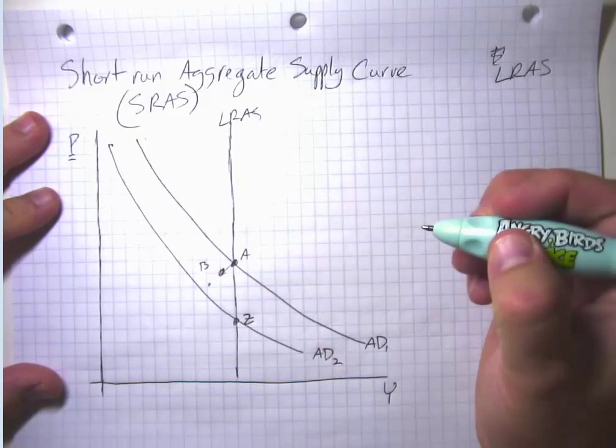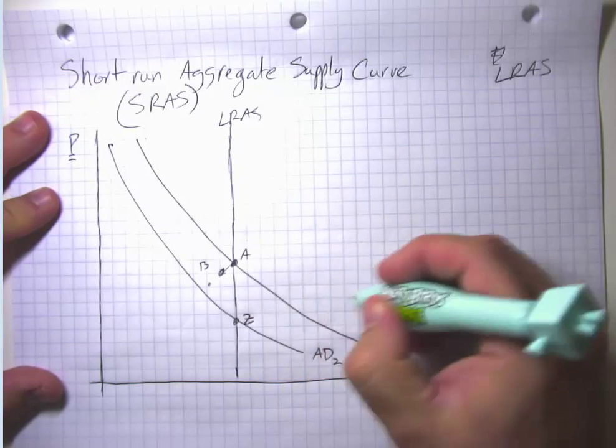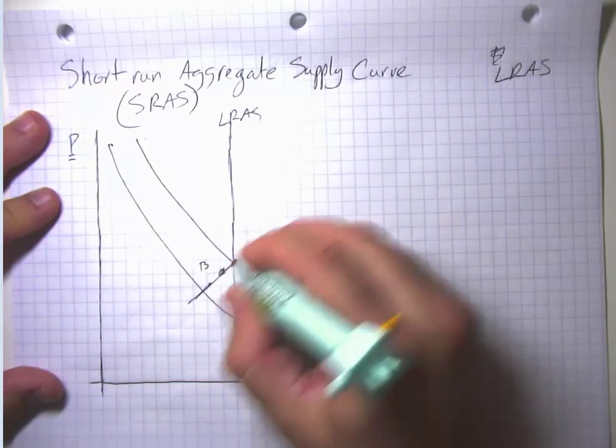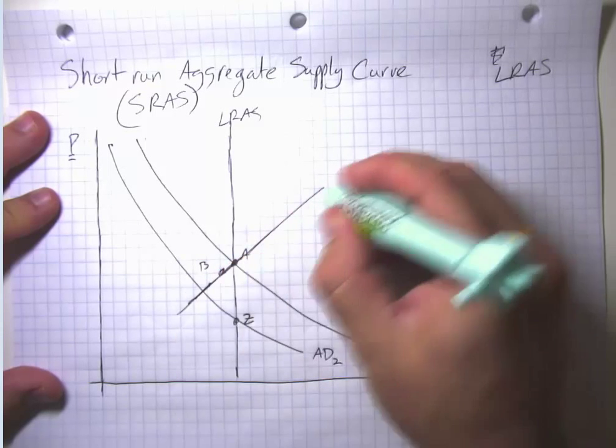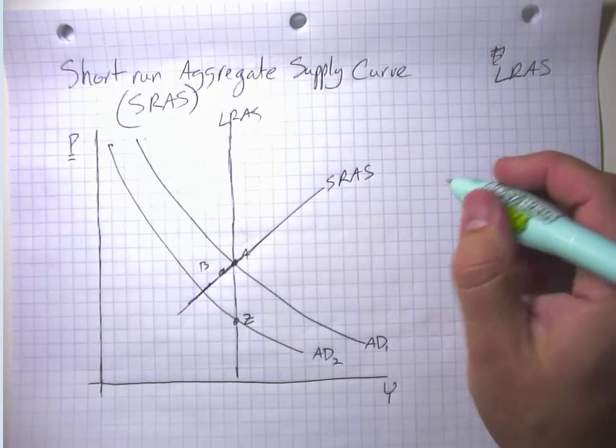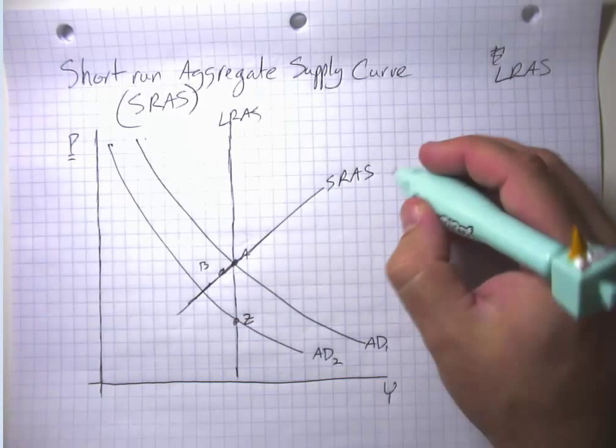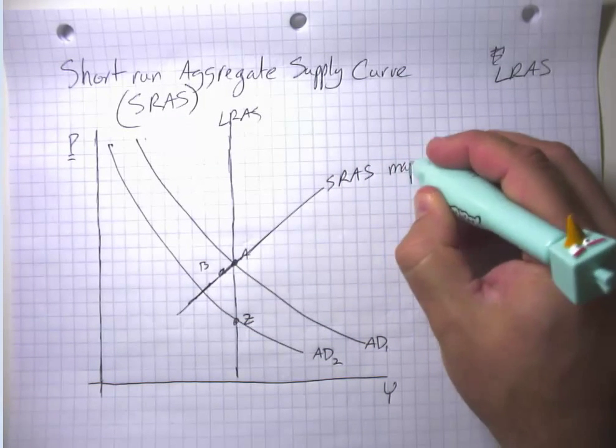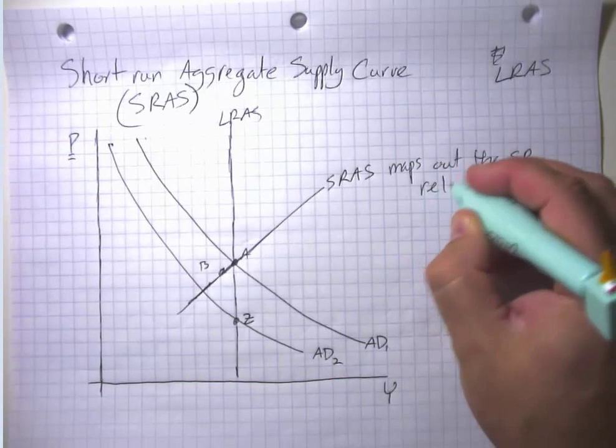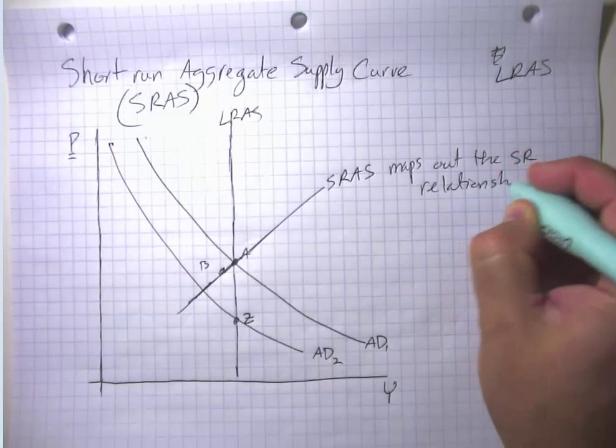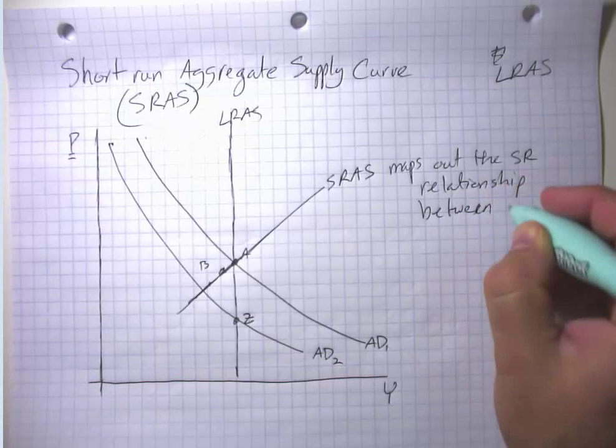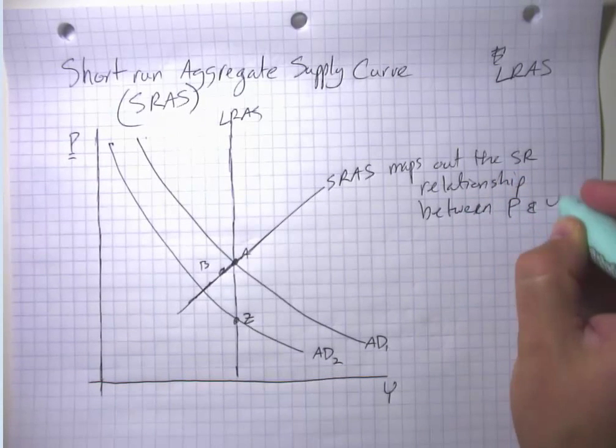And if we had had a growth in aggregate demand, what would have happened was GDP would have risen and prices would have risen too. So we have some kind of short-run aggregate supply curve. And the short-run aggregate supply curve maps out the short-run relationship between the price level and real GDP.